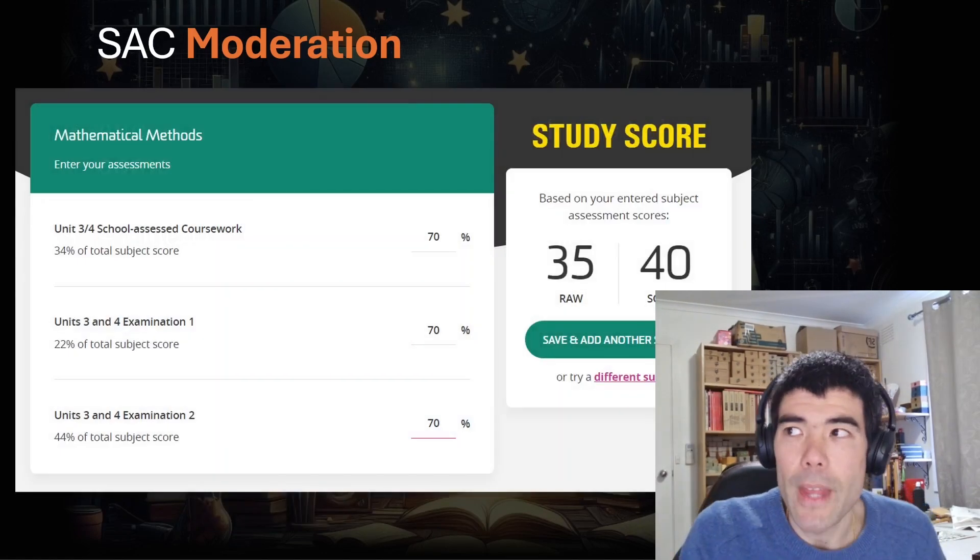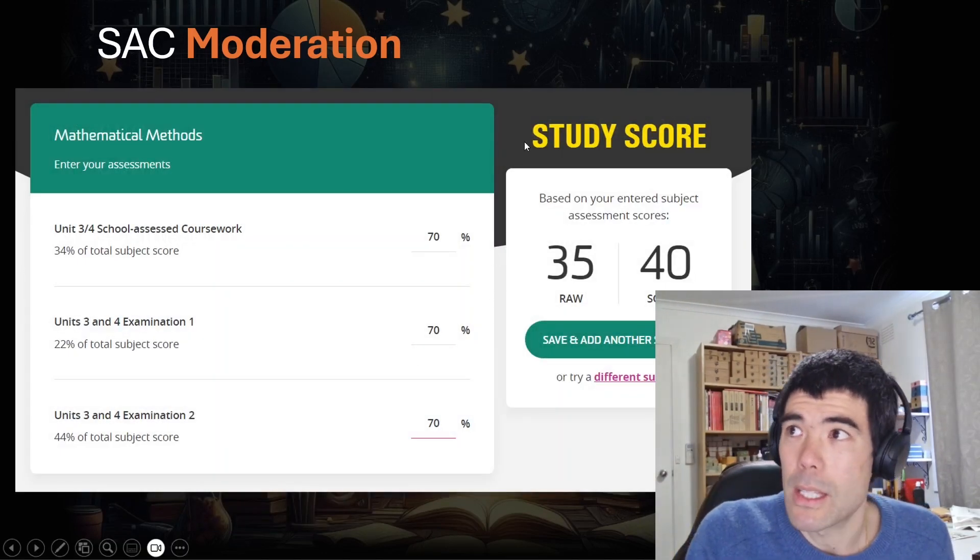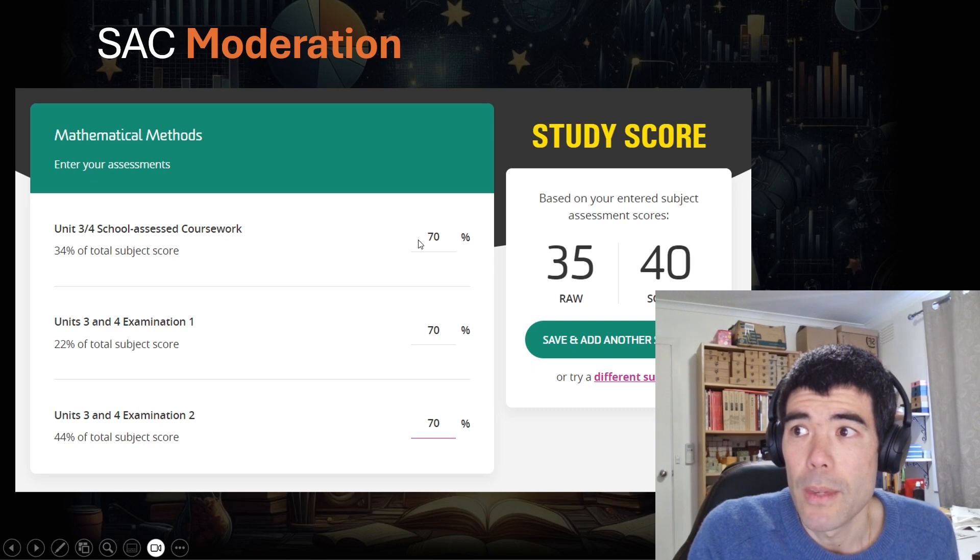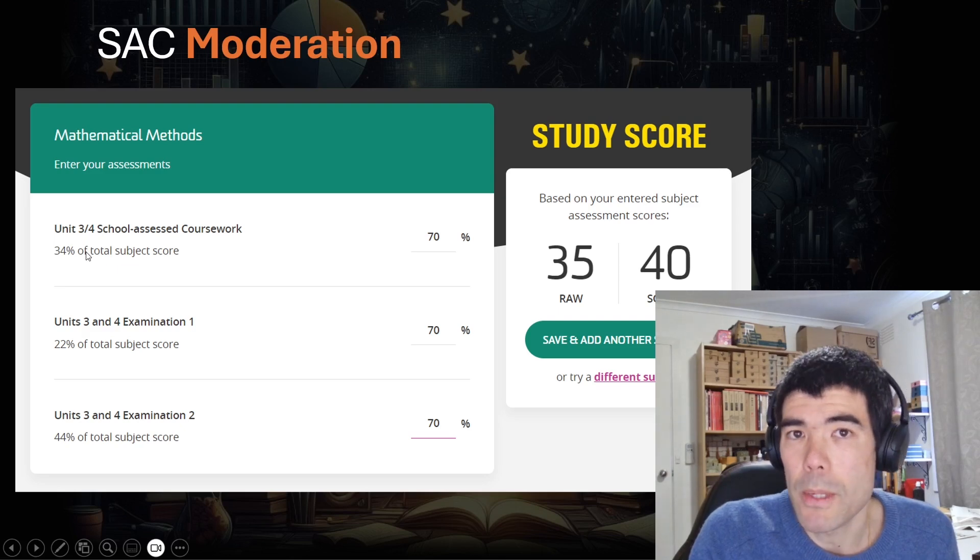It's actually not that well understood. And even in this like very popular study score calculator online, they make no adjustment for SAC moderation. So we just enter our SAC score, enter exam one and exam two scores. And these percentages have changed now. So SACs are actually worth 40% these days, and this is 20 and 40.